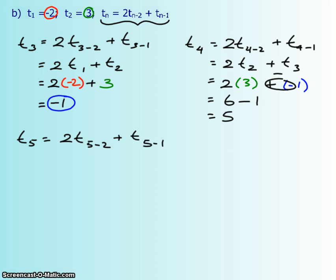And then my last term, t₅, is 2 times t₅₋₂, which was the negative 1,